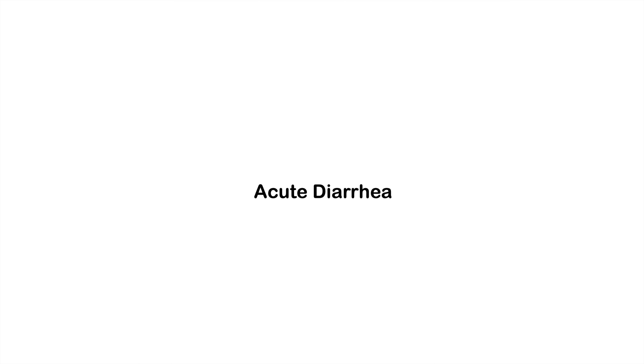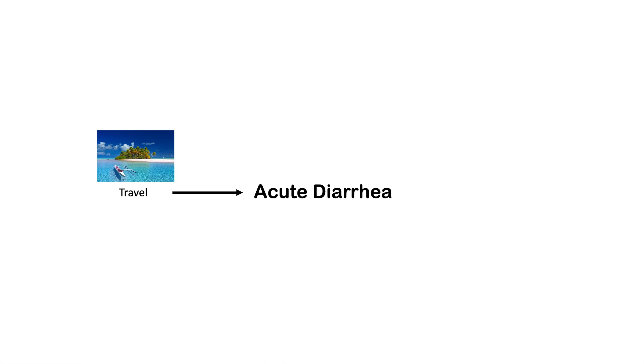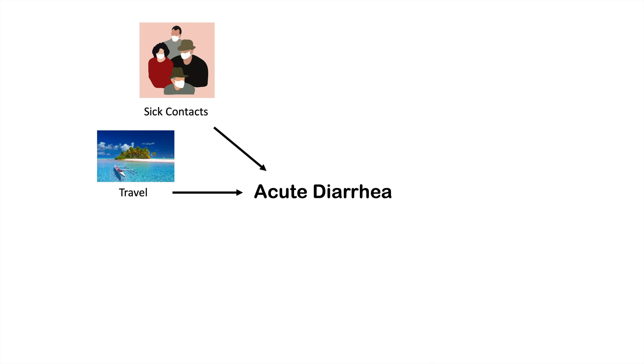If an individual has had diarrhea for less than two weeks, they have acute diarrhea. We can then look at a multitude of other factors to determine the cause. One of those is travel history — have they been anywhere outside the country or within the country, and have they been exposed to infectious agents that could be causing their acute diarrhea?